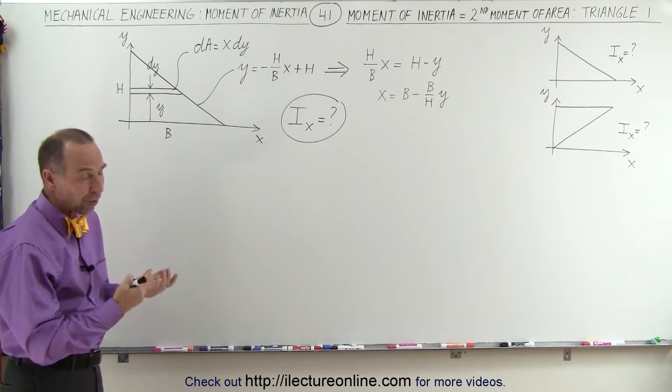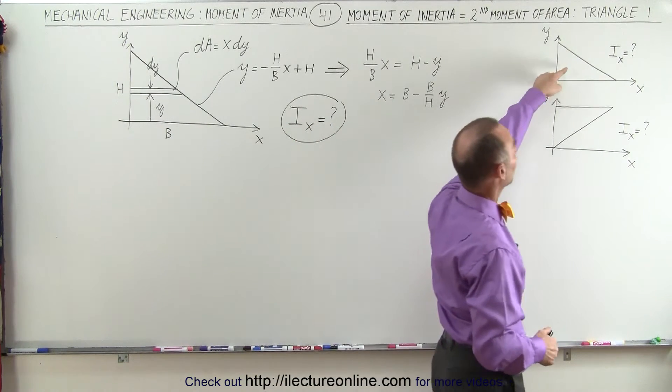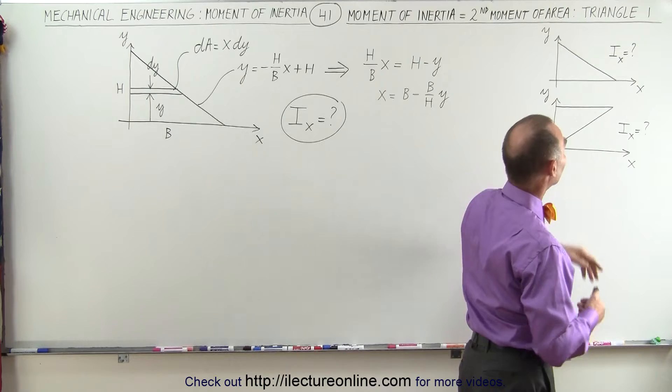We realize that the triangle can be positioned in two different ways. We can have the triangle like this, and then we try to find the moment of inertia relative to the x-axis.